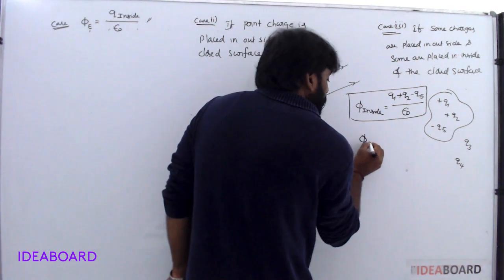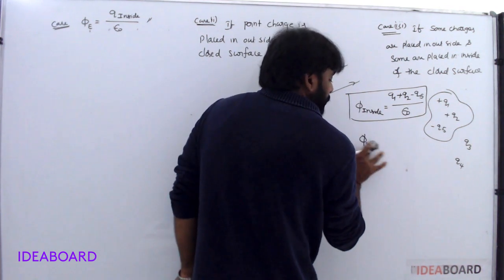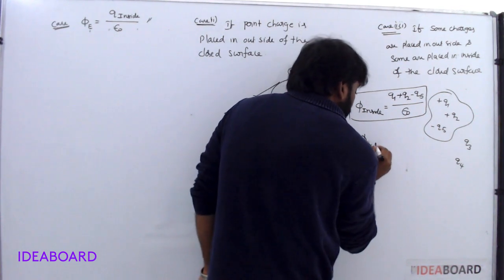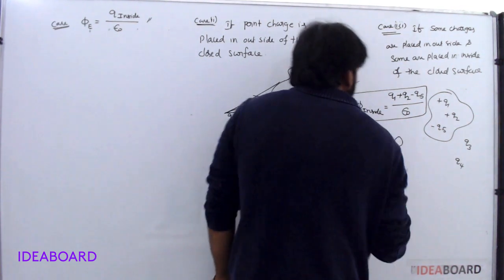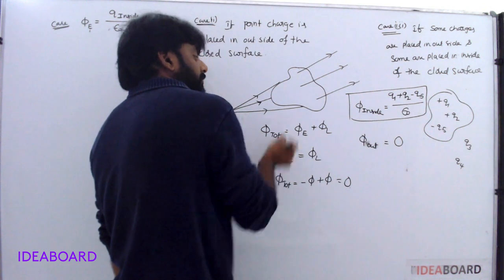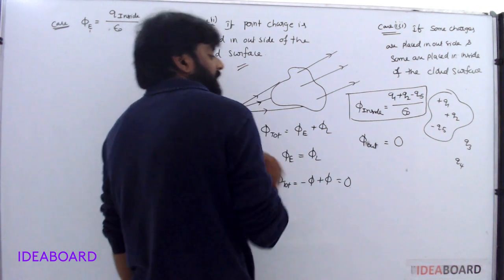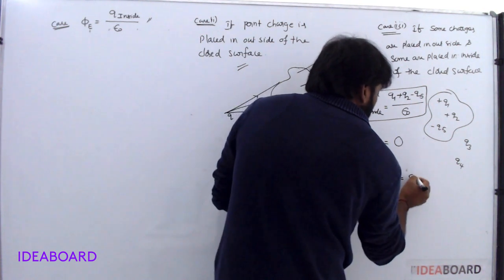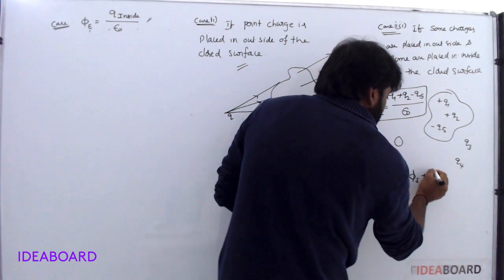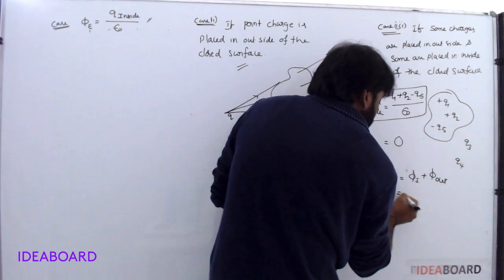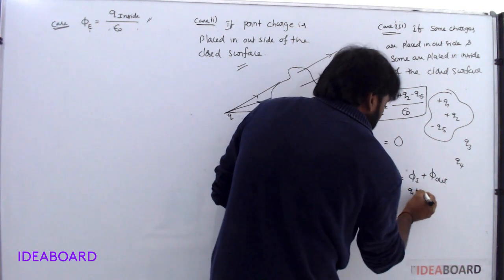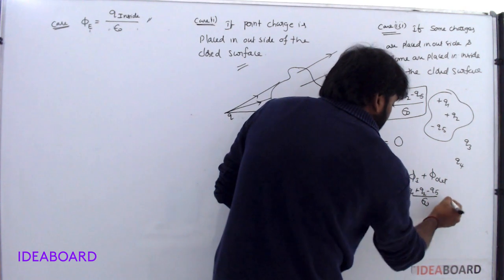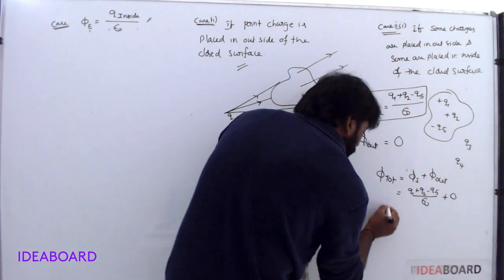Next, due to outside charges: the outside charges contribute flux equal to zero, according to the second case. So total flux is equal to inside plus outside, which is q1 plus q2 minus q5, by epsilon naught, plus zero.